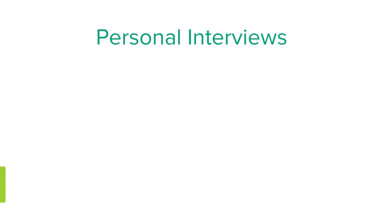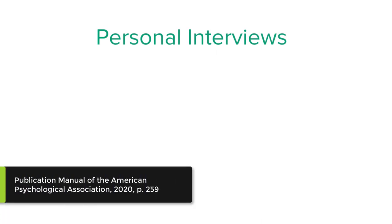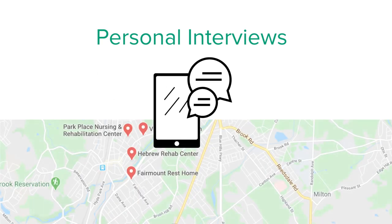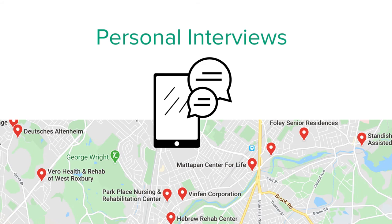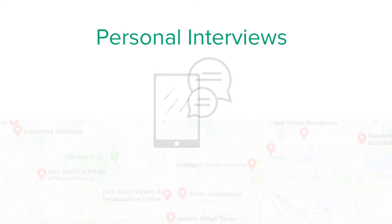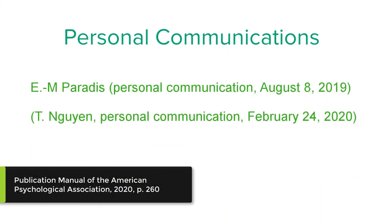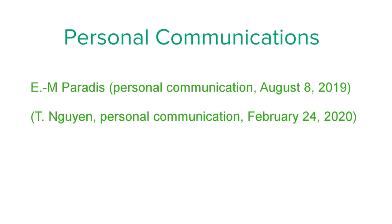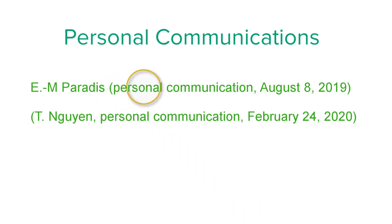Let's say you need to conduct a couple of personal interviews for an assignment — for example, a telephone interview with a registered nurse to learn more about the problem of community falls among elders living in the Hyde Park section of Boston. This type of information in APA is referred to as a personal communication, such as an email, telephone conversation, text message, or other. You only need to cite personal communications in the text. The reason for this is because this type of information is not recoverable for your reader, unless it's archived. Cite the personal communication by adding the interviewee's first initials followed by the last name, then type the words 'personal communication' in lowercase, followed by the date in parentheses.